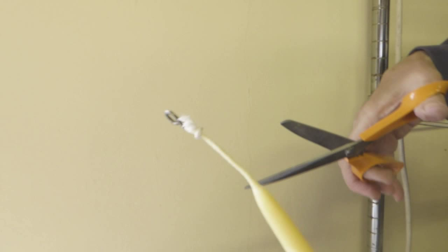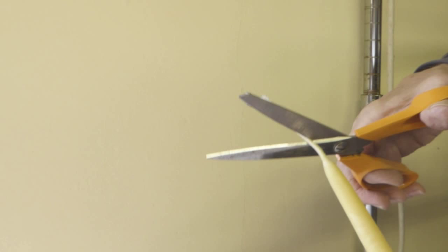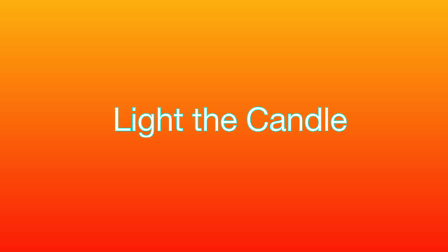The last thing you need to do before you can light your candle is to trim the wick. You need to cut it at a slight angle and the height of it needs to be about the depth of your thumb. Don't cut it too short otherwise it will be difficult to light.